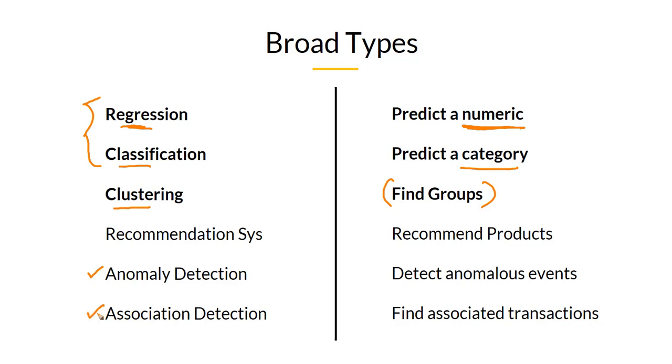Association detection is whenever you are dealing with transaction data and you want to find out those transactions that are occurring together. This also has very commercially useful use cases. Now let's understand each of these in a little bit more detail.